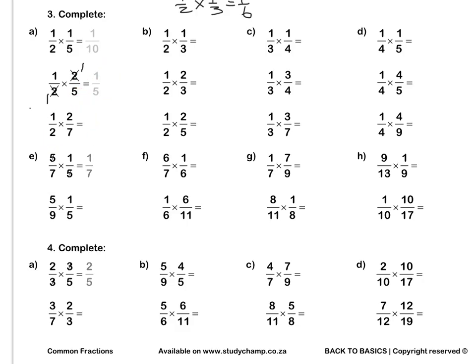Let's do this question together. We can simplify our 2s — divide by 2, divide by 2 — then we multiply out to get one seventh. Lastly, let's look at E together. We simplify by dividing top and bottom by 5 and we get a final answer of one seventh. For this question, we can divide top and bottom by 5, giving 1 and 1, and we multiply out to get one ninth.